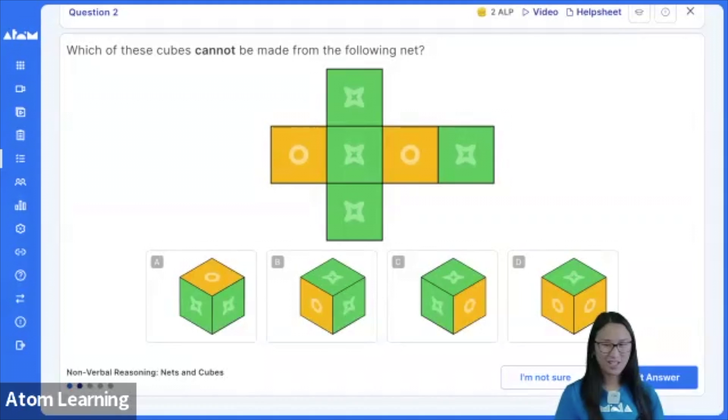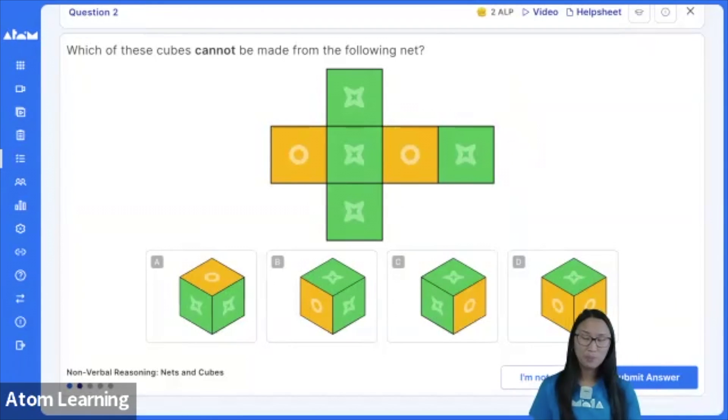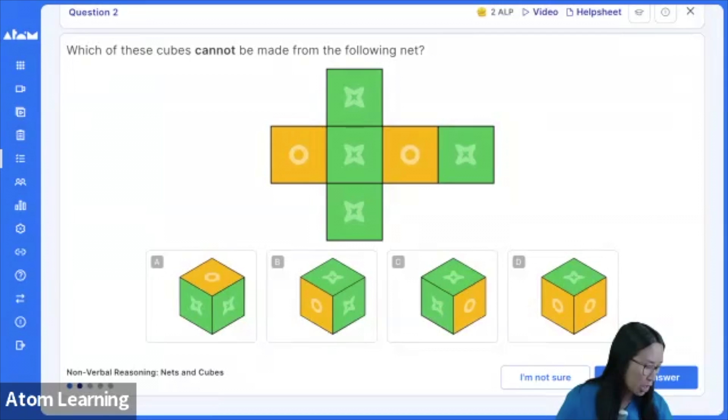Look at this jazzy question. Careful now. Make sure you read the question properly. It says which of these cubes cannot be made from the following net? So cannot be made. And here are our results. The most popular answer was D, by a country mile. Let's have a look.